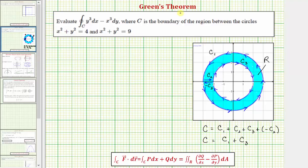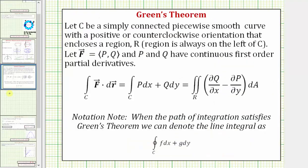Let's begin by reviewing Green's Theorem. Green's Theorem states that if we have a simply connected piecewise smooth curve with a positive or counterclockwise orientation that encloses a region R, meaning the region R is always on the left of the curve,